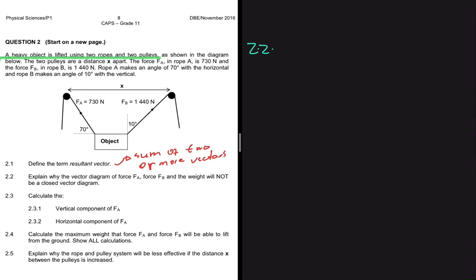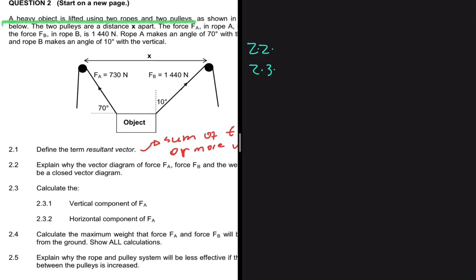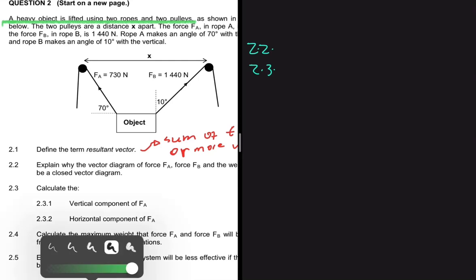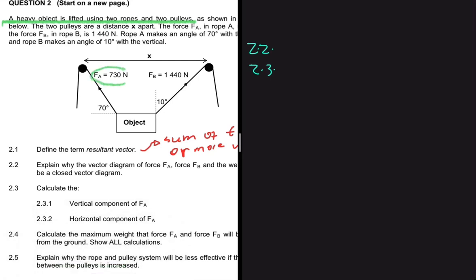We can only have a closed vector diagram if the resultant net force is equal to zero. Moving to 2.3, we need to calculate the vertical component of FA. Looking at our sketch, FA is at an angle of 70 degrees to the horizontal and we want the vertical component. The formula we use is: FY, being the vertical component, equals FA multiplied by sine of theta.